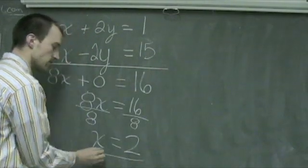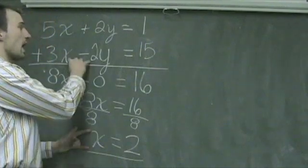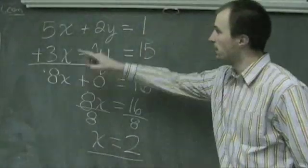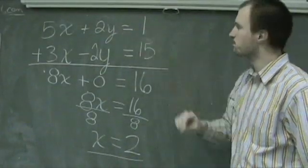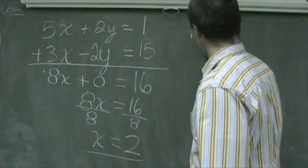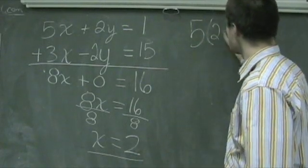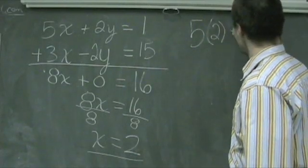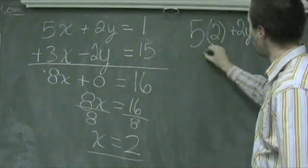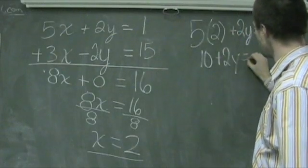Now that we know that x is equal to a positive 2, what we can do is substitute this value into either one of our original equations. So, I'm going to substitute it into my top equation, and I have now 5 times my value of x, which is now 2, so 5 times 2, plus 2 times y is still set equal to 1, or 10 plus 2 times y is equal to 1.